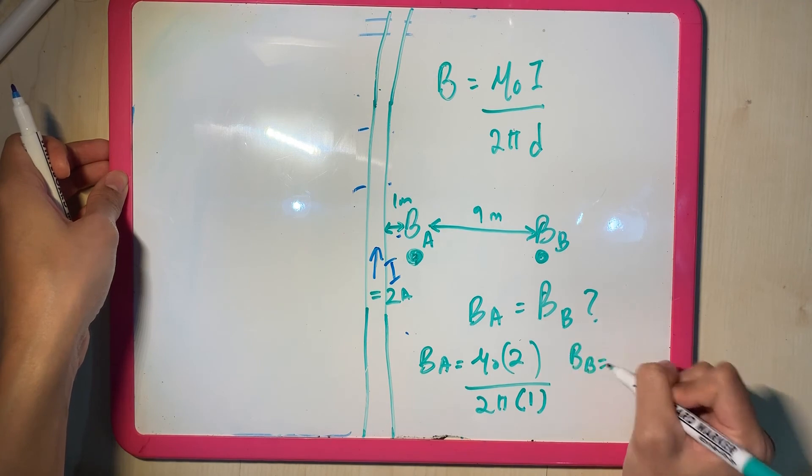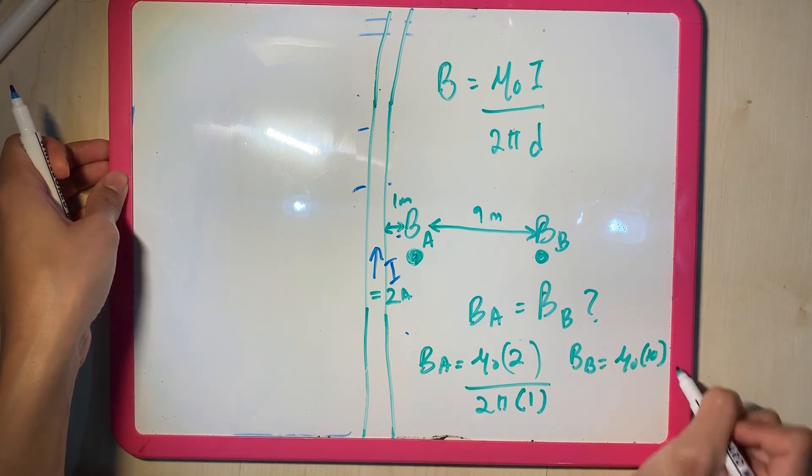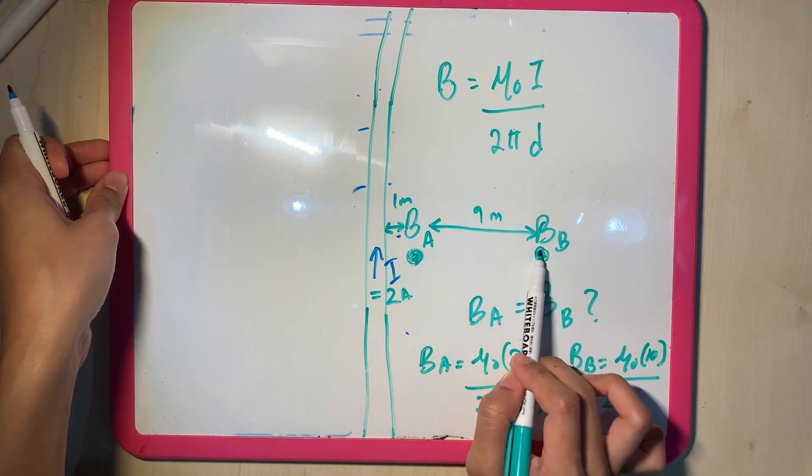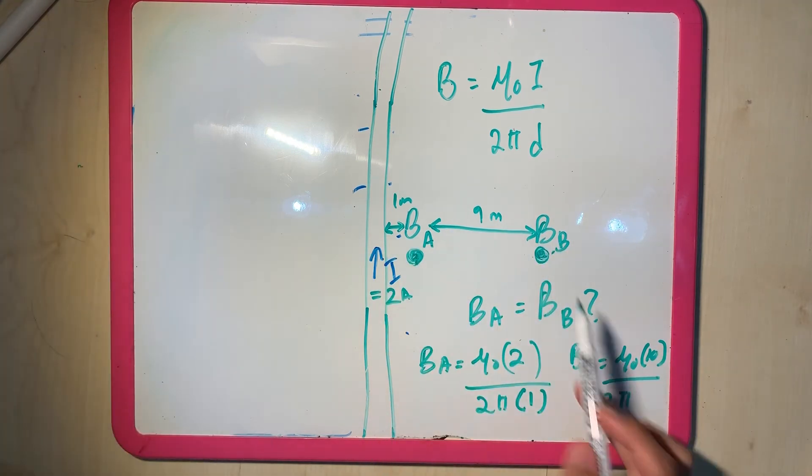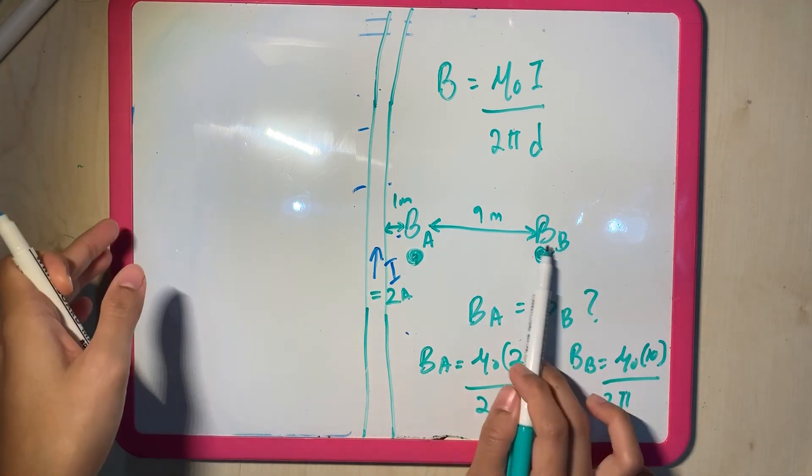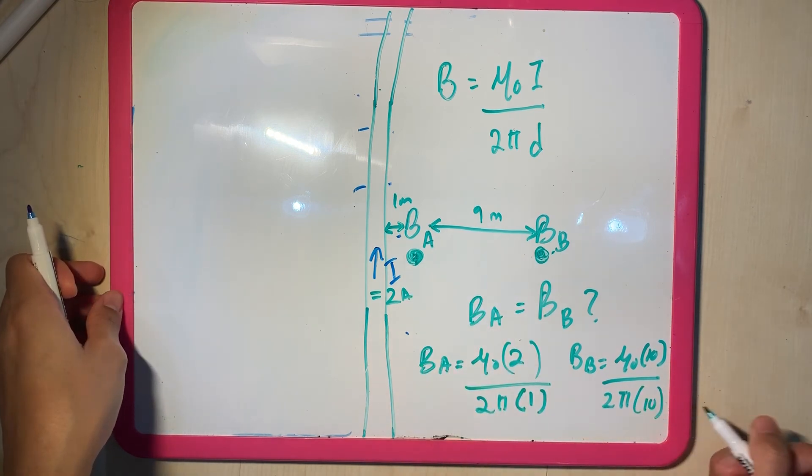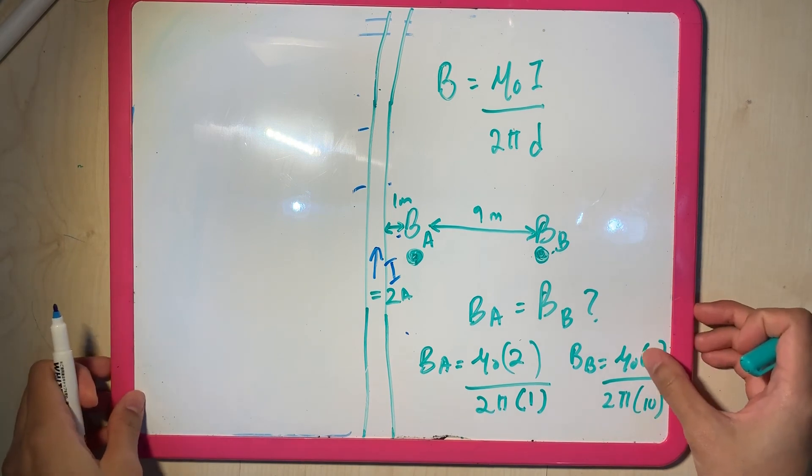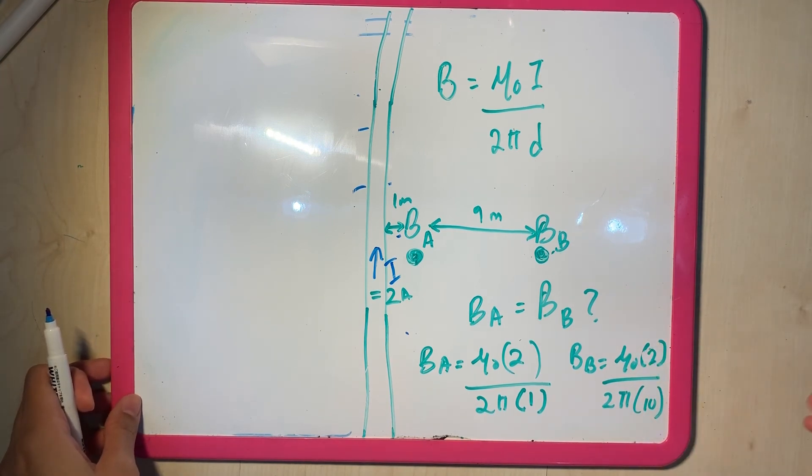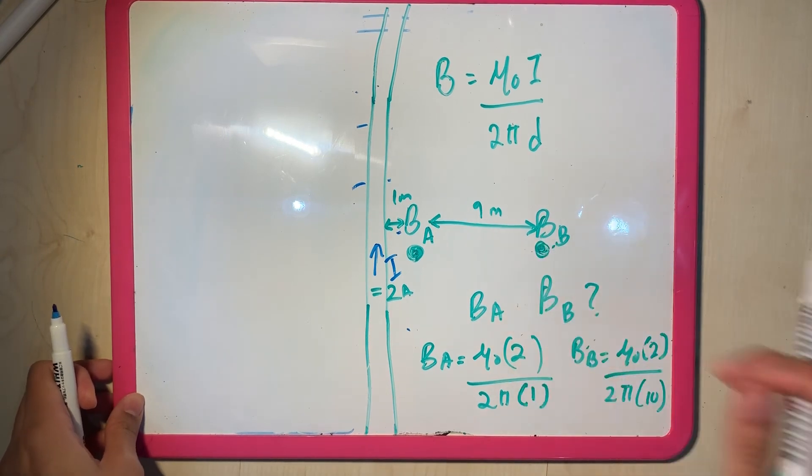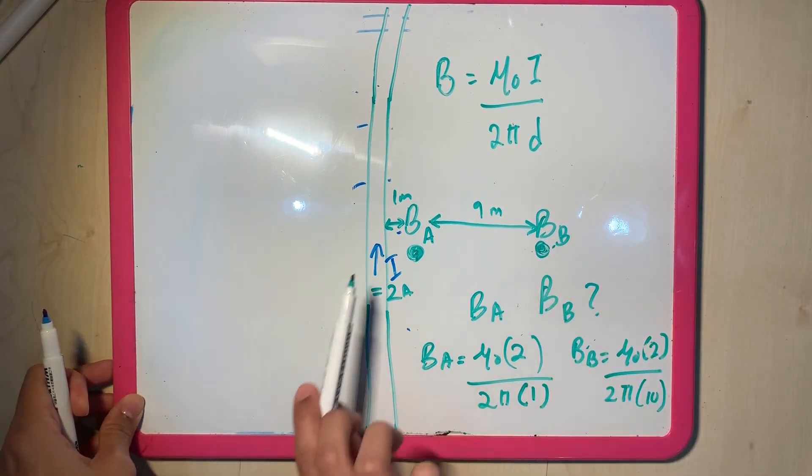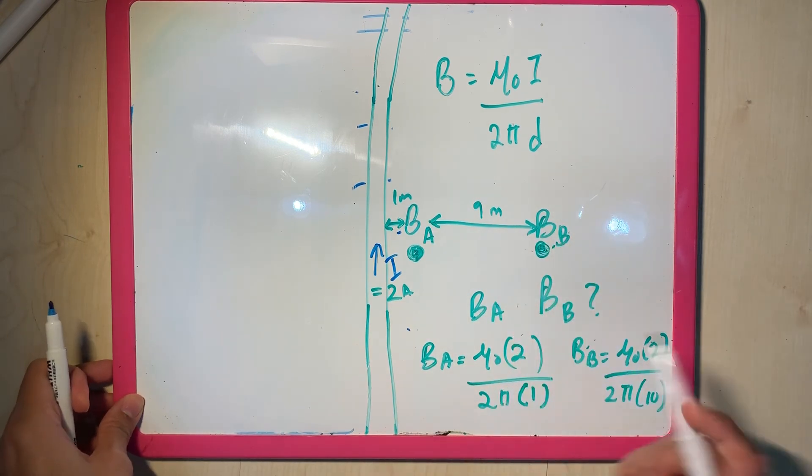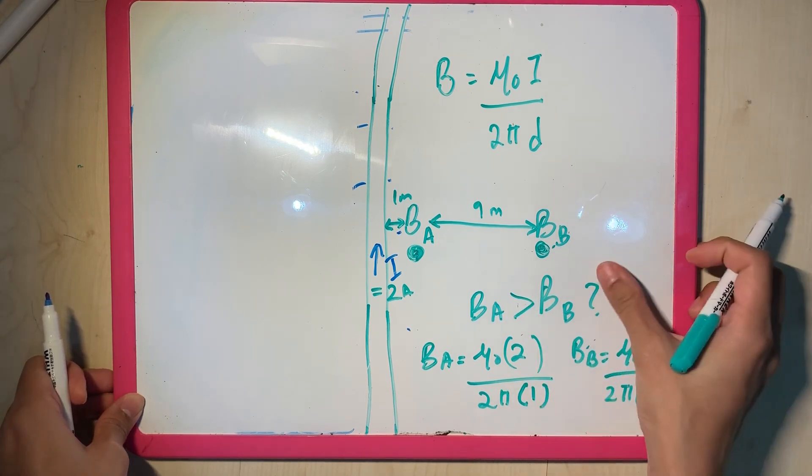And BB is BB. So 10 over 2 pi. What's my D? The point that I'm very interested in to the wire because I'm interested in point B. So the distance between them is 10. Not 9, it's 10. So from here, the larger my denominator, the smaller my B, right? So this guy, BB, is actually smaller than BA.